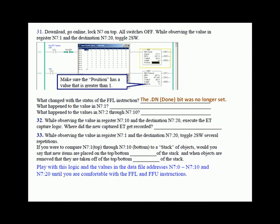The value in N7:1 was unloaded to memory location N7:20. Consequently, all values in N7:2 through N7:10 — the rest of the stack — shifted one location towards N7:1. So N7:1 was the first memory location loaded and it was the first one unloaded — first in first out.